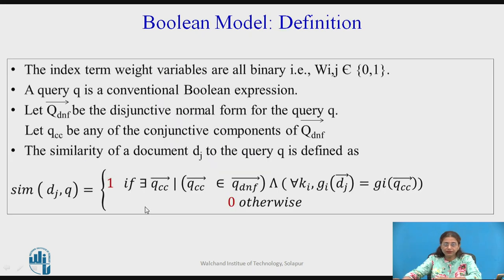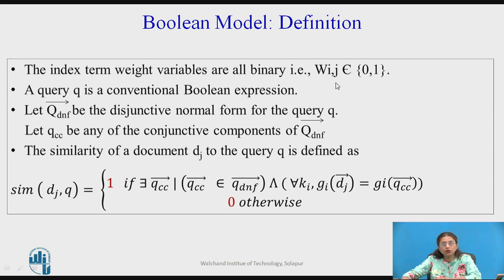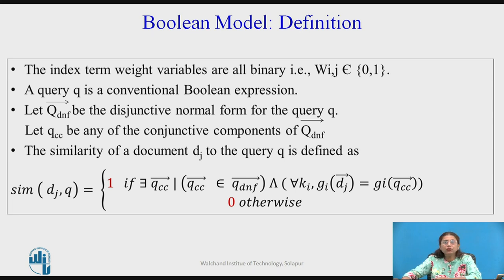Let us see the formal definition of this Boolean model. Index terms are binary, so w_ij — the weight of the i-th term in the j-th document — will be 0 or 1. A query q is a conventional Boolean expression. Once we have been given a query, we have to convert it into its disjunctive normal form. This qDNF vector is the disjunctive normal form for query q.